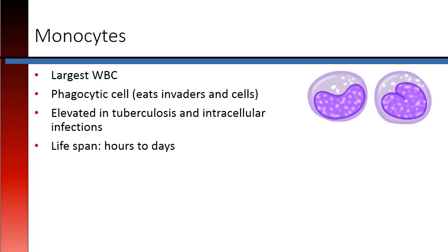Monocytes are the largest white blood cell. They are also phagocytic cells, meaning they eat cells and invaders. Monocytes are generally elevated in tuberculosis and intracellular infections. Their lifespan is between hours and days.